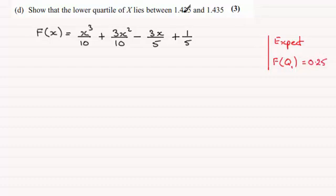So by substituting these values into f of x, we should find that one value is slightly more than 0.25 and the other one is slightly less than 0.25. So if that's the case, we would know that q1 lies between 1.425 and 1.435.